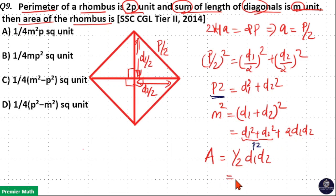So this can be written as half into m square minus p square by 2, which means your answer is option C, that is 1 by 4 m square minus p square.